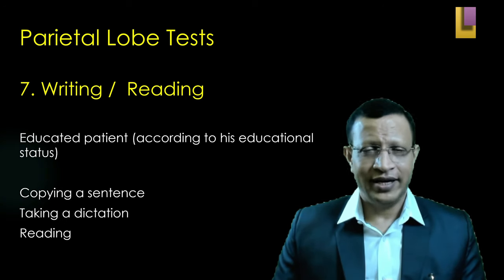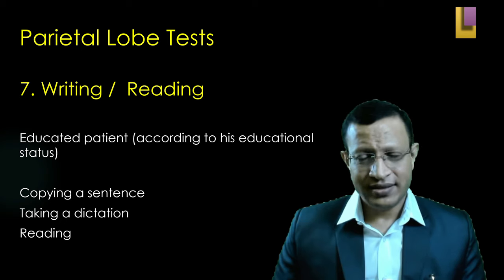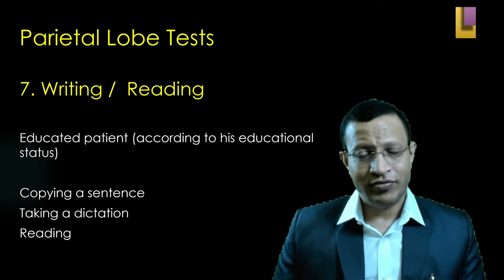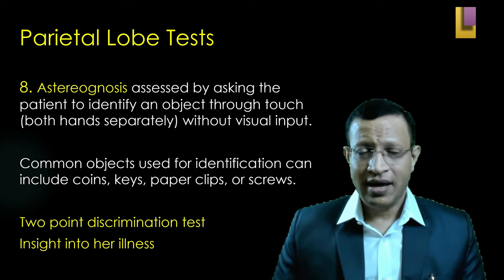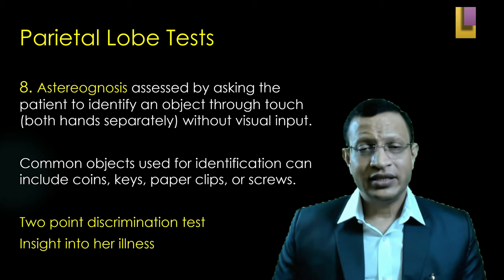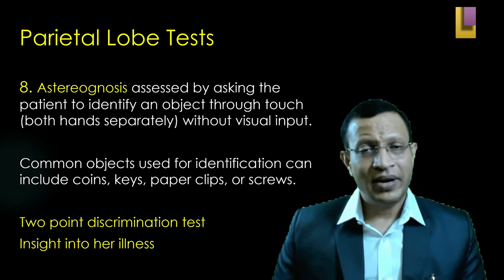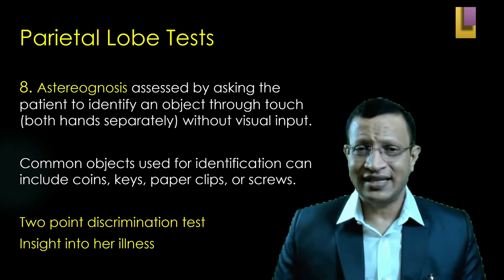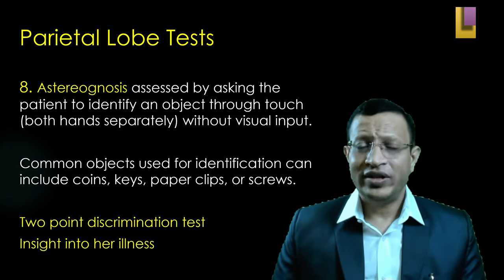Coming to writing and reading — if the patient is educated, depending on educational status, ask him to copy sentences or a paragraph, give a dictation, and then ask him to read what he has written. This again tests parietal lobe function. Moving to astereognosis — assessed by asking the patient to close his eyes and placing common objects in one hand at a time. Give a coin in one hand and ask him to recognize it; place a key in the other hand and ask him to recognize it. Both hands should be tested separately. You can also do a two-point discrimination test, and check whether the patient has insight into his illness.